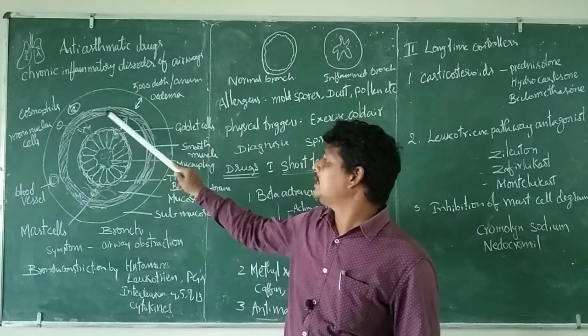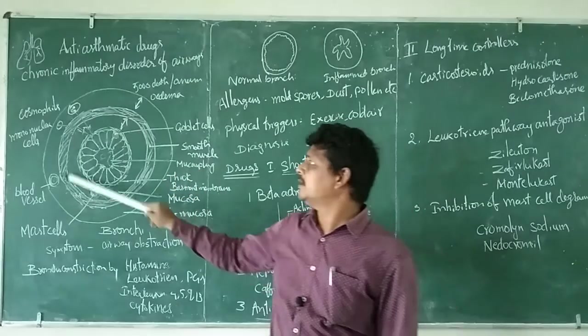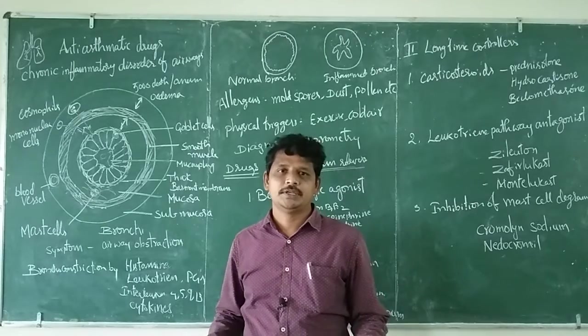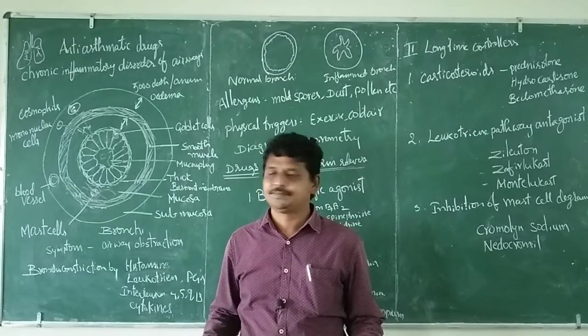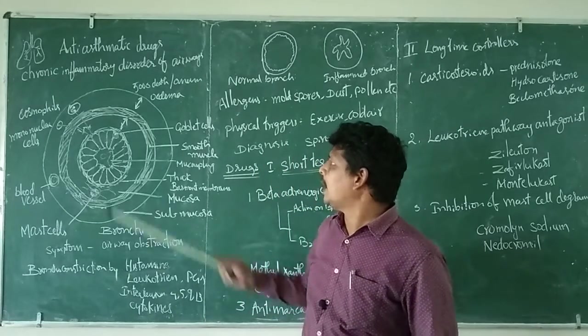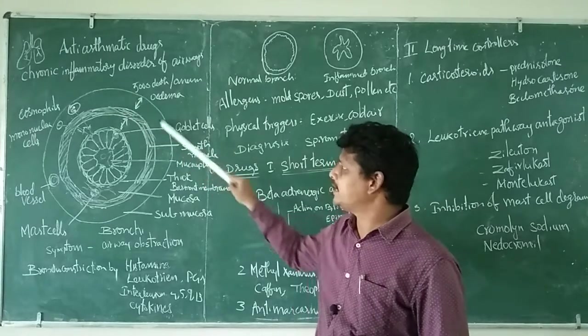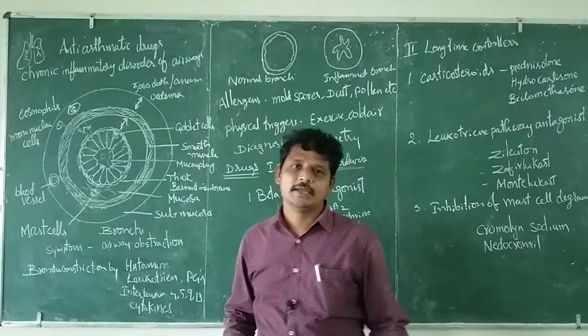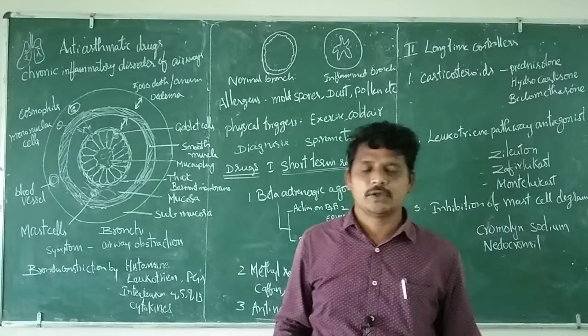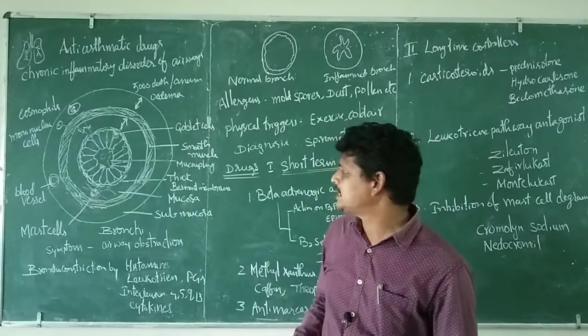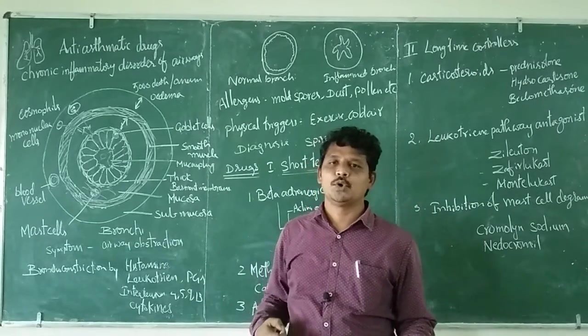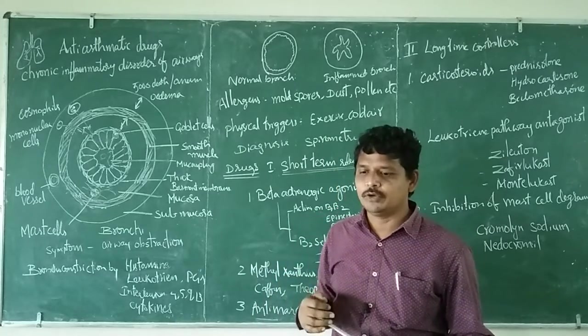Apart from that, there is a smooth muscle ring which controls the contraction and relaxation of the bronchi. Upon this, the submucosa layer is present where blood supply occurs and mononuclear cells are present. This is the basic structure of the bronchi.